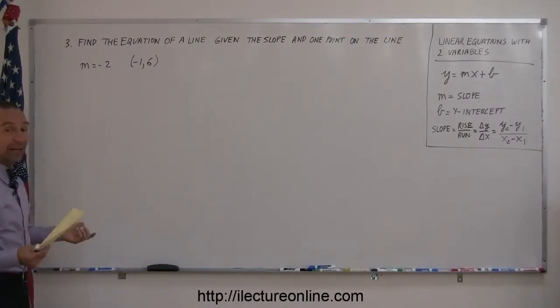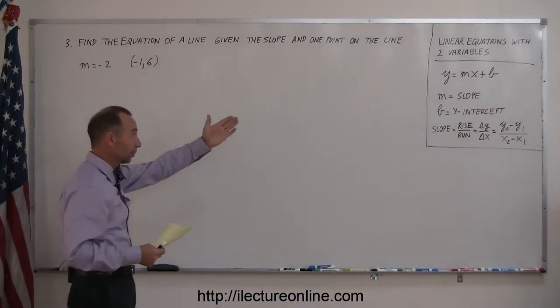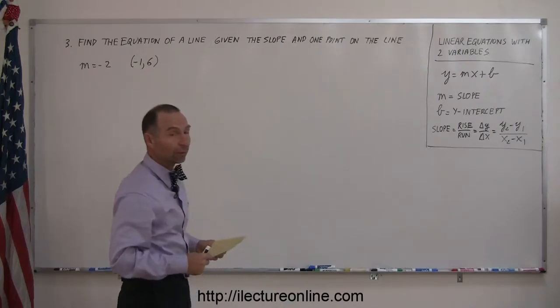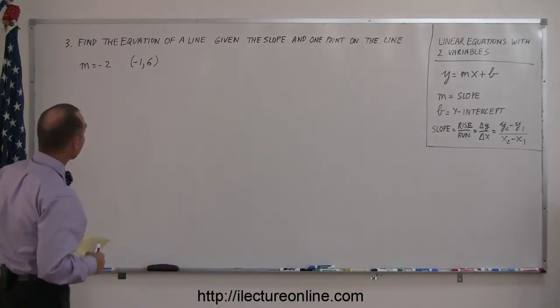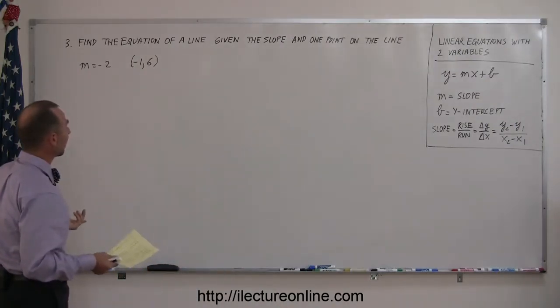Alright, now we're dealing with a different kind of problem, still working with linear equations and two variables. And here they ask you to find the equation of a line given the slope and one point on the line.